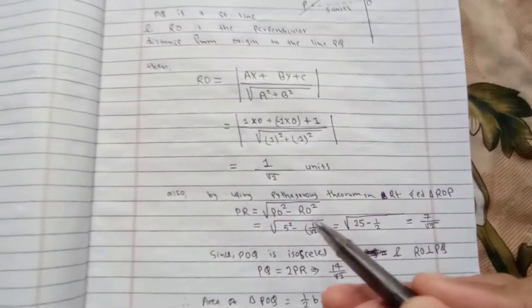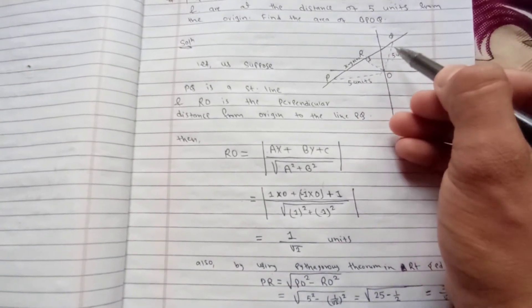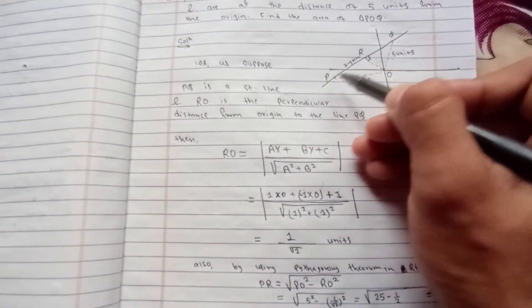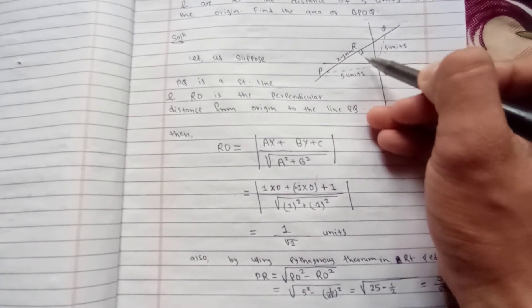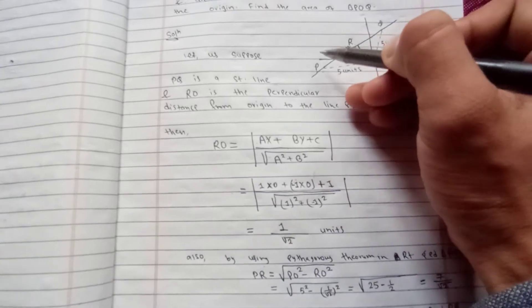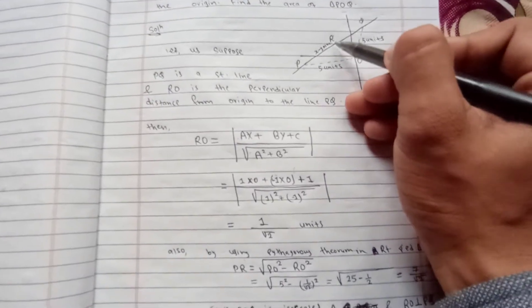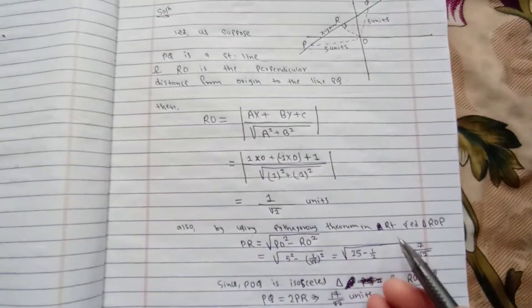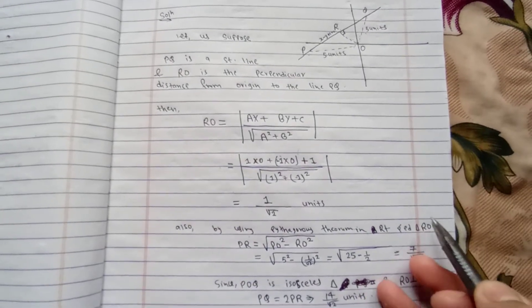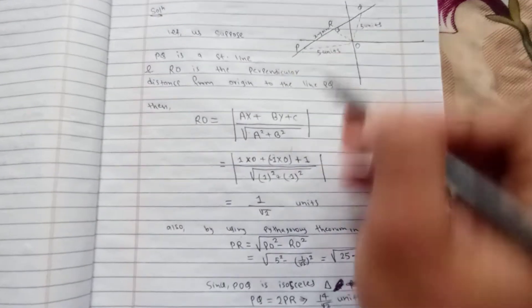To calculate the area of this triangle, we need to find the length of PQ, which is the base. The perpendicular distance height is already calculated. To find distance PQ, we use the Pythagoras theorem in triangle ROP.